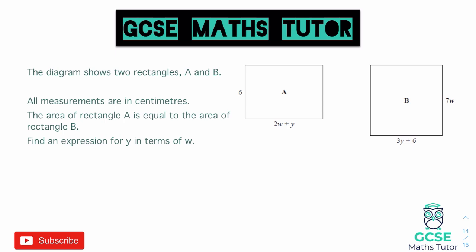To get started, we want to approach this part where it says the area of rectangle A is equal to the area of rectangle B. So we want to find the expressions for the area of both. For the area of rectangle A, we would do 6 multiplied by the length there, which is 2W plus Y. For the expression for the area of the other rectangle, we would do 7W multiplied by 3Y plus 6. These form the expressions for the area, and the question said they are equal to one another, so we can put an equal sign in the middle.